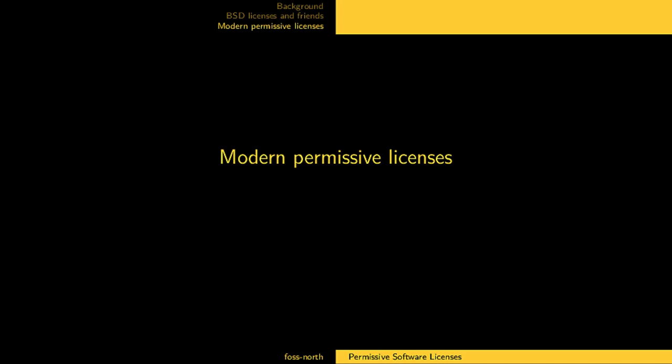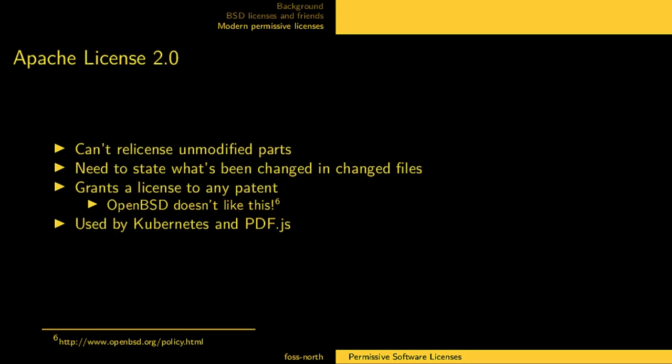There are two main modern permissive licenses, and one is the Apache License version 2. It has some of its own strangeness. It's a permissive license, but you can't re-license unmodified parts — so you can't close-source stuff that you didn't change at all. And if you base your software on it and change stuff, you need to state what's been changed in those changed files.